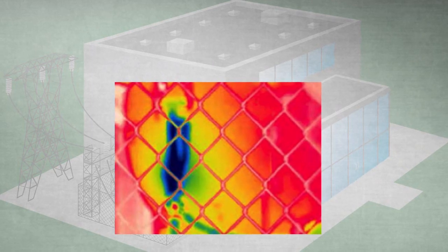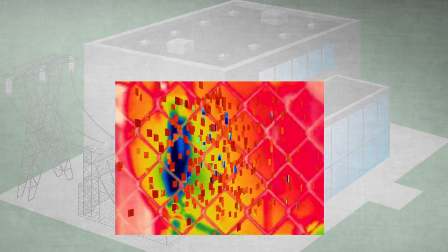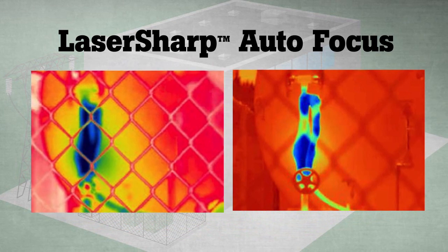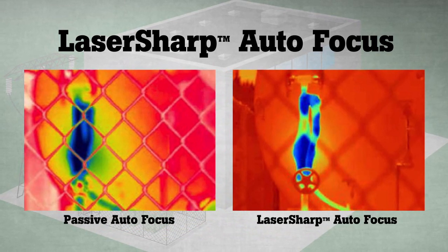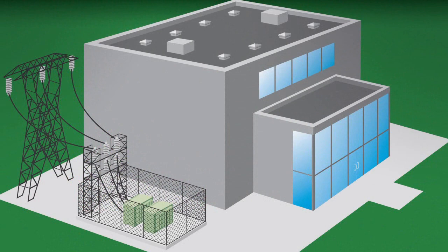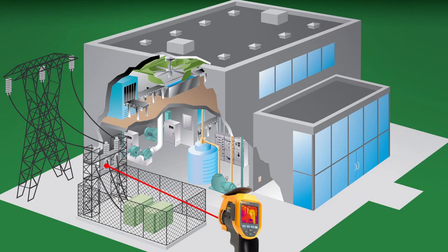Announcing a more intelligent autofocus system: laser sharp autofocus, available only from Fluke. Laser sharp autofocus tells you exactly where you are focusing. It uses a laser to calculate the distance before it focuses.